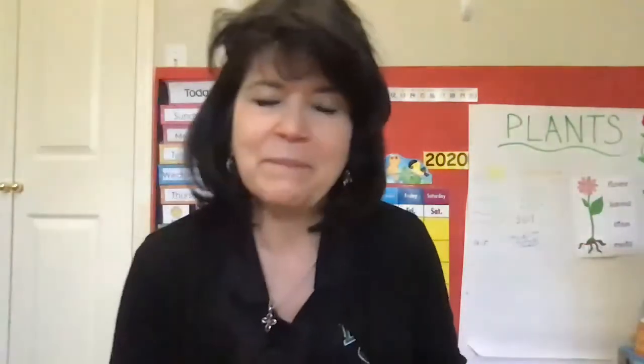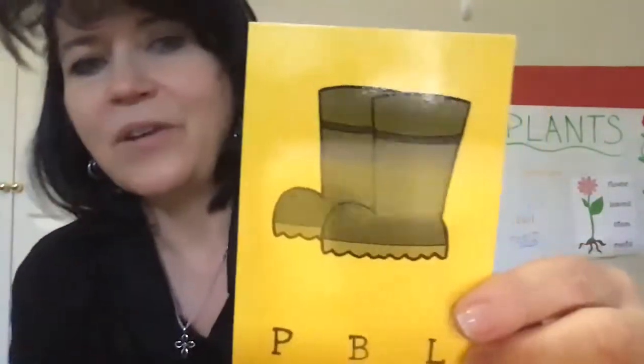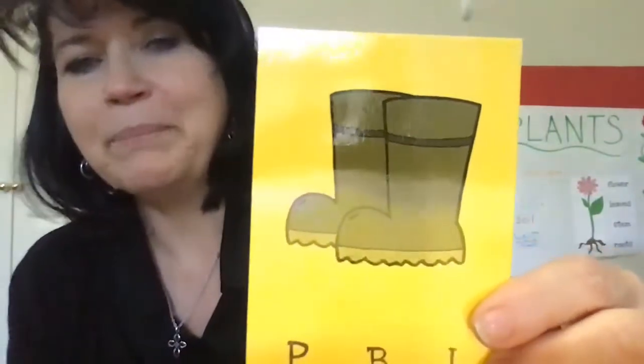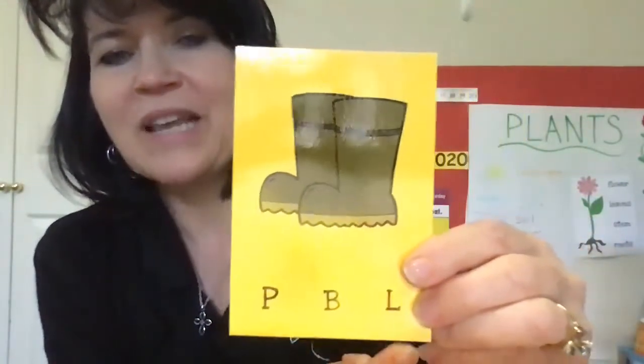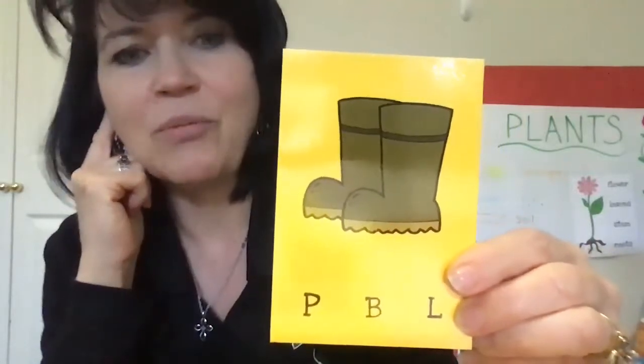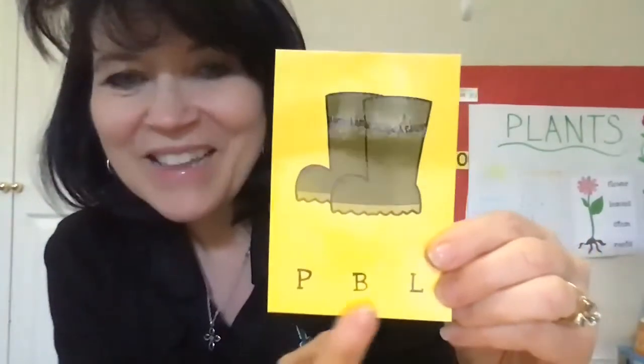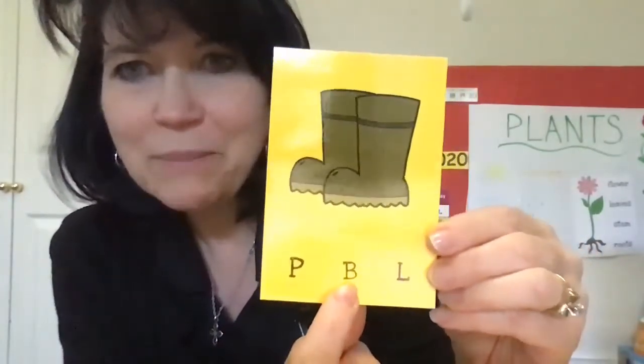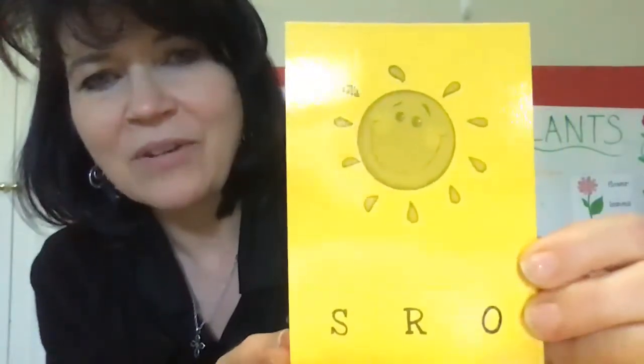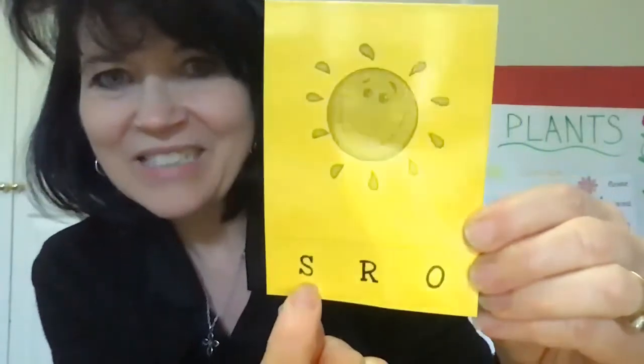Here's another one — those are boots. Which one of these letters starts the sound you hear at the beginning of the word 'b-b-boots'? That's right, it's the letter B. B says 'b' as in boots. What about this? That's the sun. Sun. What sound do you hear? What letter makes that sound? You're right, it's the letter S. S says 's' as in sun.